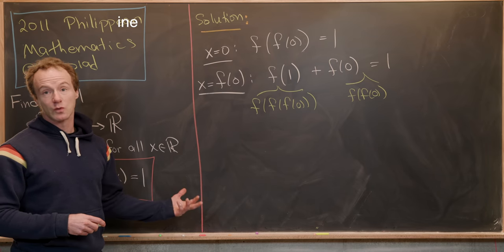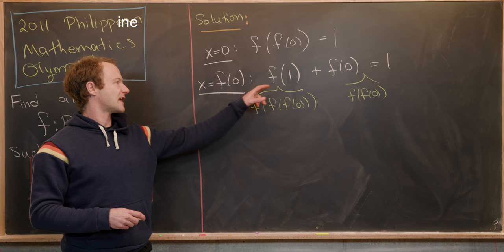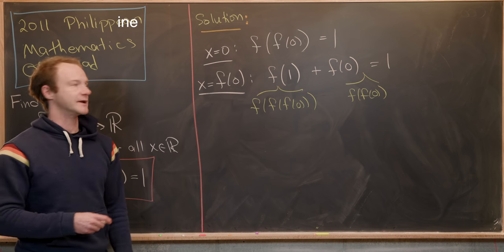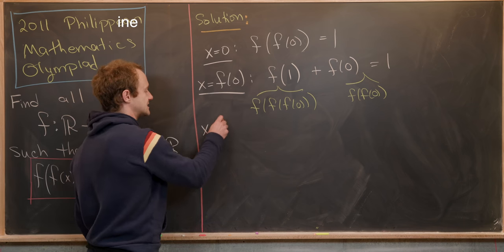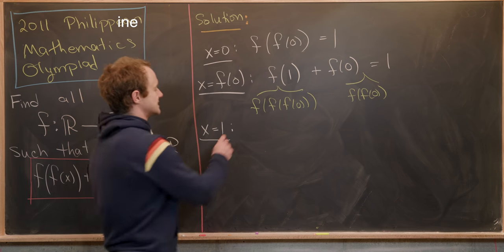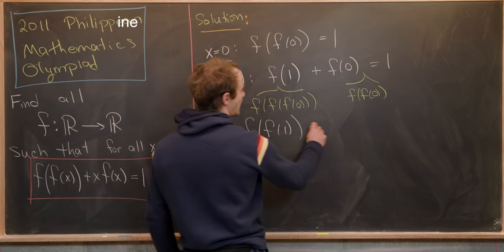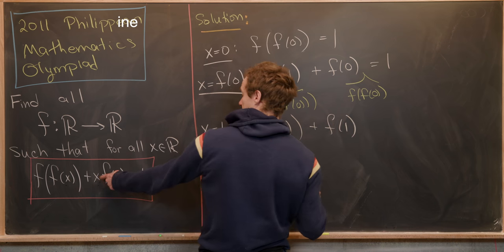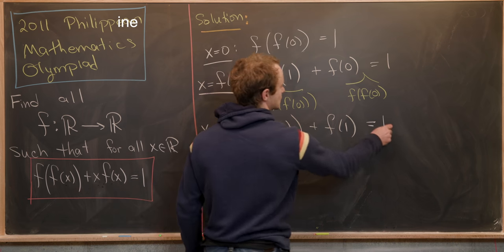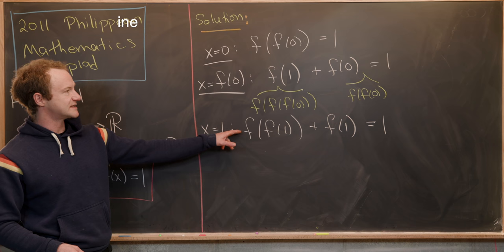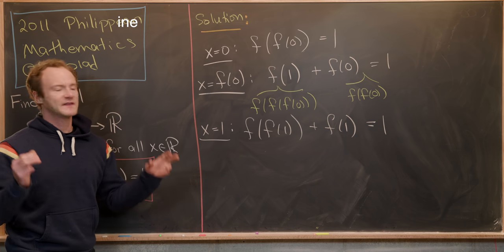Next, we will set x equal to 1. And the motivation for that is we see f(1) right here. So let's see what we get from setting x equal to 1. So that's going to give us f evaluated at f(1) + f(1)·1 from this right here equals 1 like that.